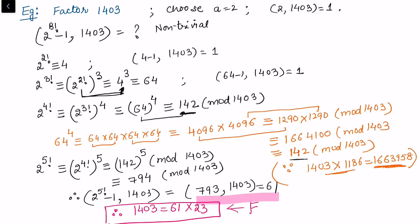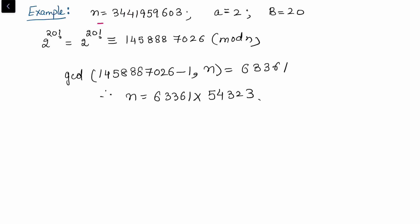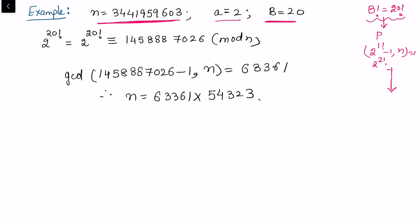In the final example, I want to factor a large integer n, choosing a with gcd(a, n) = 1, and setting b = 20 as a sufficiently large bound so that 20! covers the relevant prime factors. Starting from 2^(1!) and incrementing, we find that 2^(20!) ≡ 1458887026 mod n. Computing gcd(1458887026 - 1, n) gives a non-trivial gcd, yielding the factorization. This is how Pollard's p-1 method works.